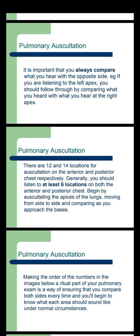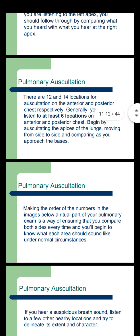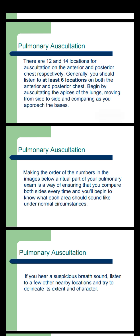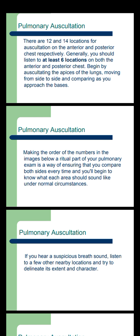There are 12 to 14 locations for auscultation on the anterior and posterior chest respectively. Generally, you should listen at least 6 locations on both the anterior and posterior chest. Begin by auscultating the apexes of the lungs, moving from side to side and comparing as you approach the bases. Making the order of the numbered locations in the image a ritual part of your pulmonary exam ensures that you compare both sides every time, and you will begin to know what each area should sound like under normal circumstances.